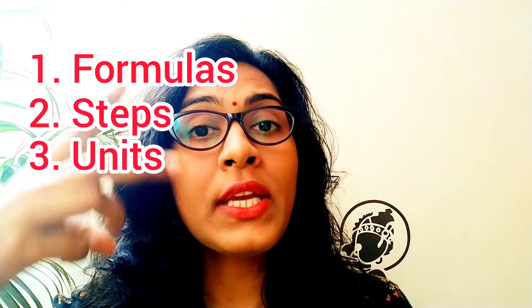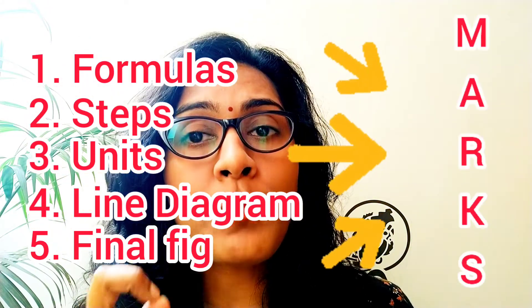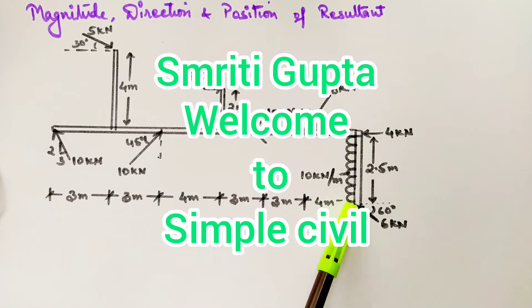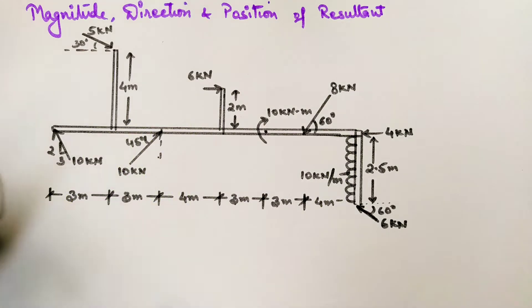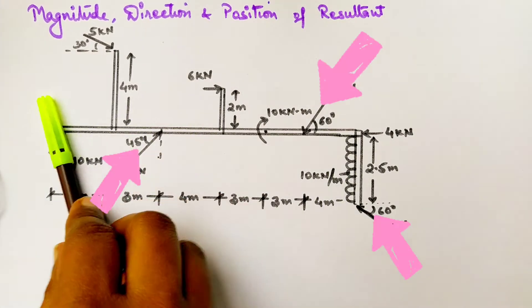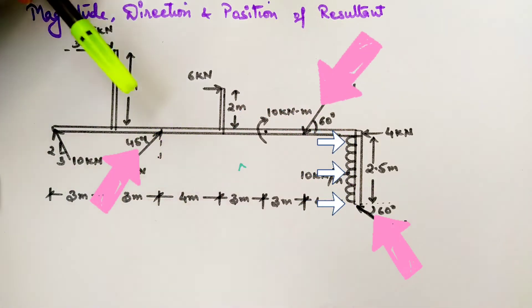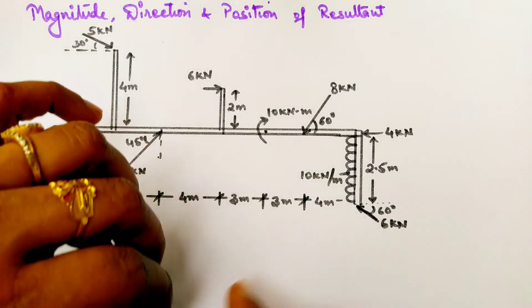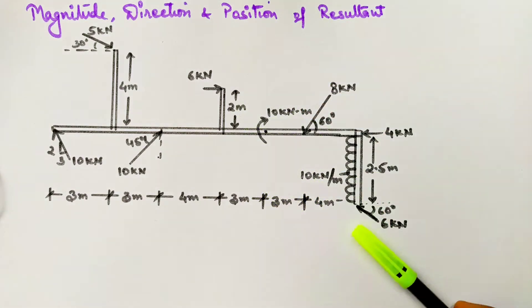For full eight marks you should write the formulas, steps, units, and then the final figure — all these things carry marks. Today we are solving this question. I'm Smithi Gupta and you are watching Simple Civil. In this question there are a few inclined forces, one UDL, and a couple. The first thing we are going to do is make a line diagram and simplify this question by resolving all the forces.